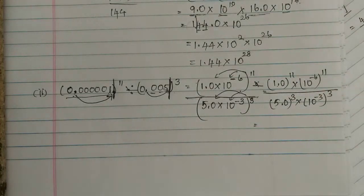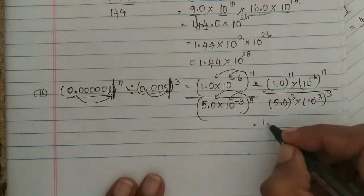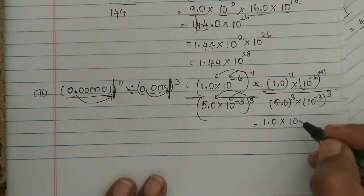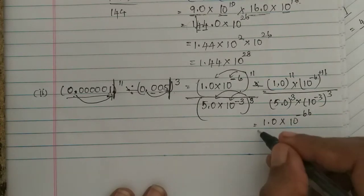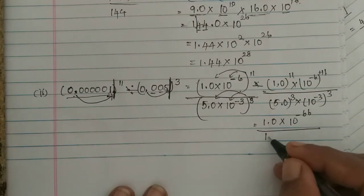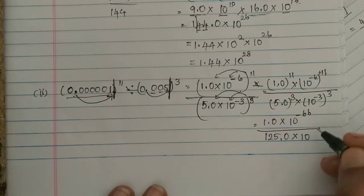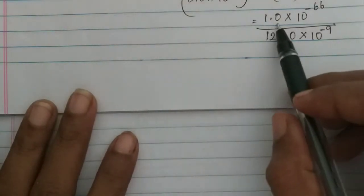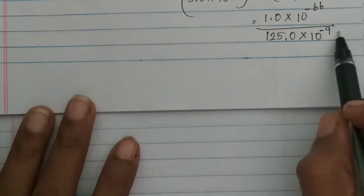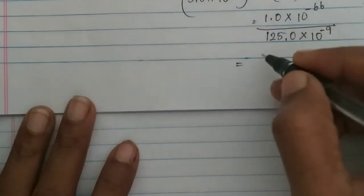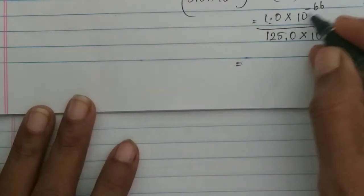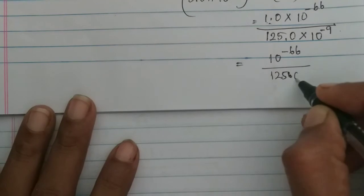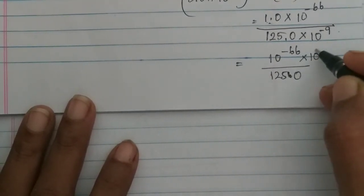So 1 to the power 11 is 1. We get 1.0 × 10 to the power of minus 6 × 11, which is minus 66. In the denominator, 5 cubed is 125, and 10 to the power minus 3 × 3 gives minus 9. So we have 1.0 × 10 to the power minus 66, divided by 125.0 × 10 to the power minus 9.